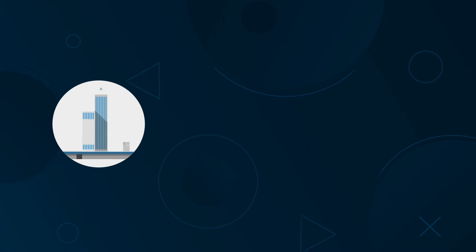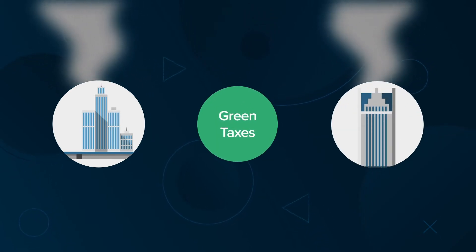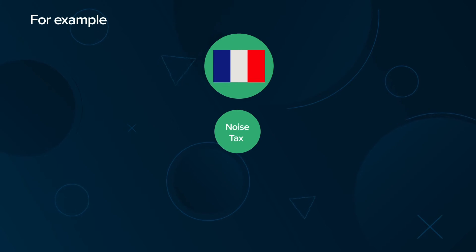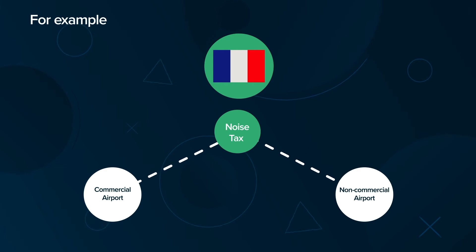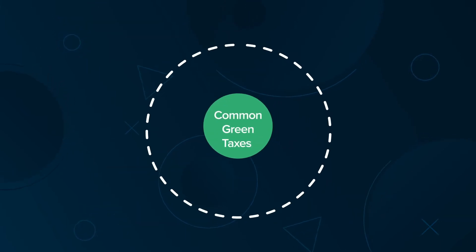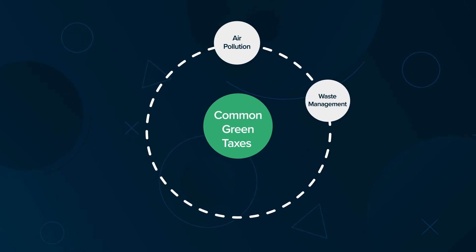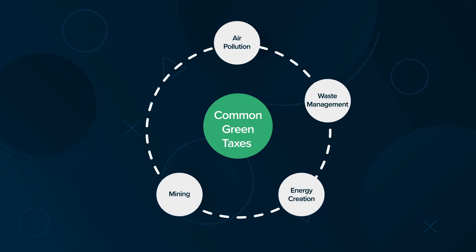While taxation of industries and companies that emit polluting gases is the most well-known application of green taxes, they can be used to deter other kinds of pollution as well. For example, France has a noise tax levied on commercial and non-commercial airport operators taking off from its nine busiest airports. The most common green taxes across the world are those applied to air pollution, waste management, energy creation, mining, and noise pollution.